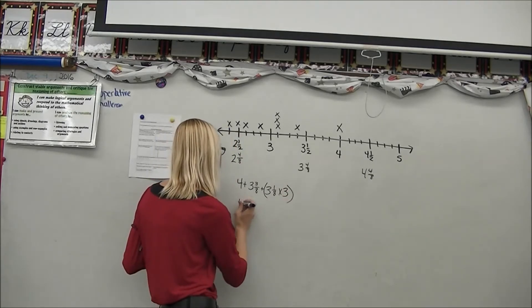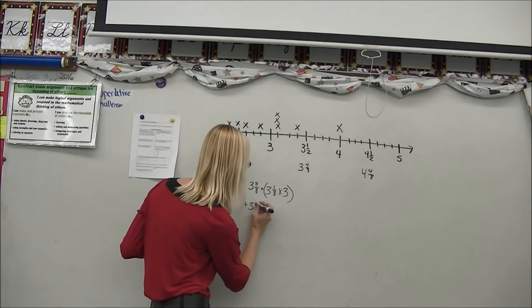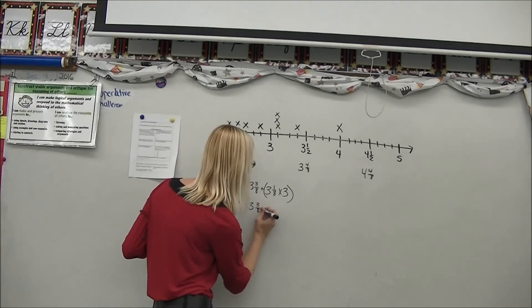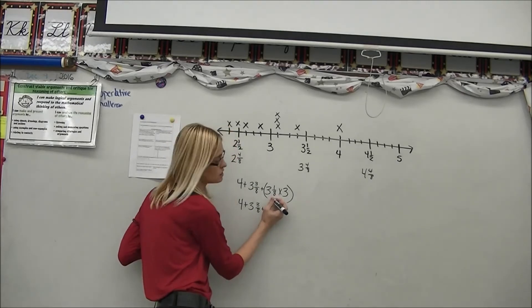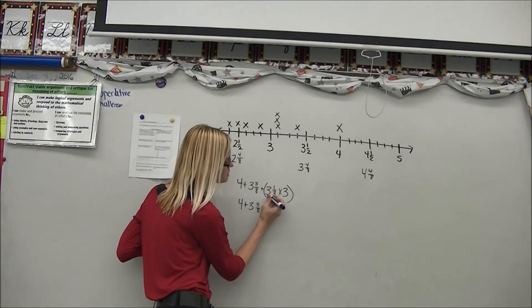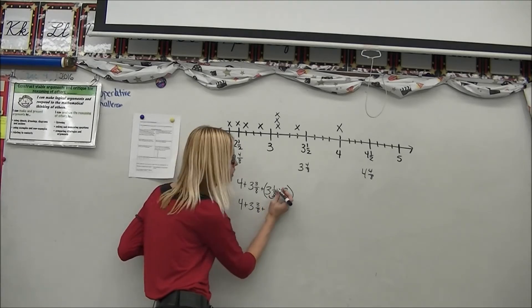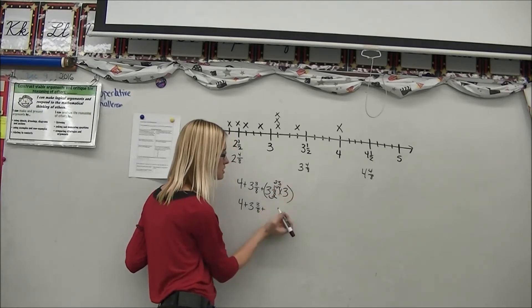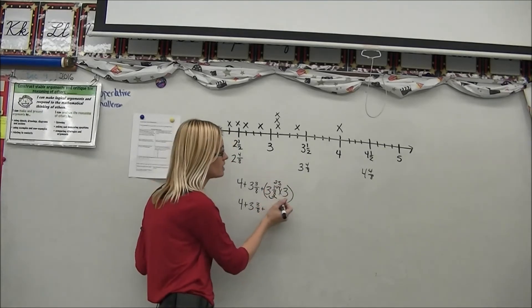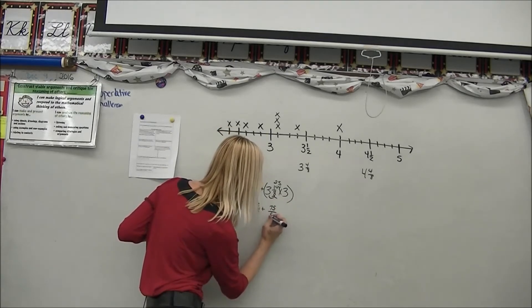So now what I'm going to do is I have 4 whole plus 3 and 3 eighths plus. Now for me to multiply this, the simplest way to do is to actually turn this into an improper fraction. So 3 times 8 is 24 plus 1. And that makes my new numerator 25 eighths. So now I'm doing 25 eighths times 3 which equals 75 eighths.